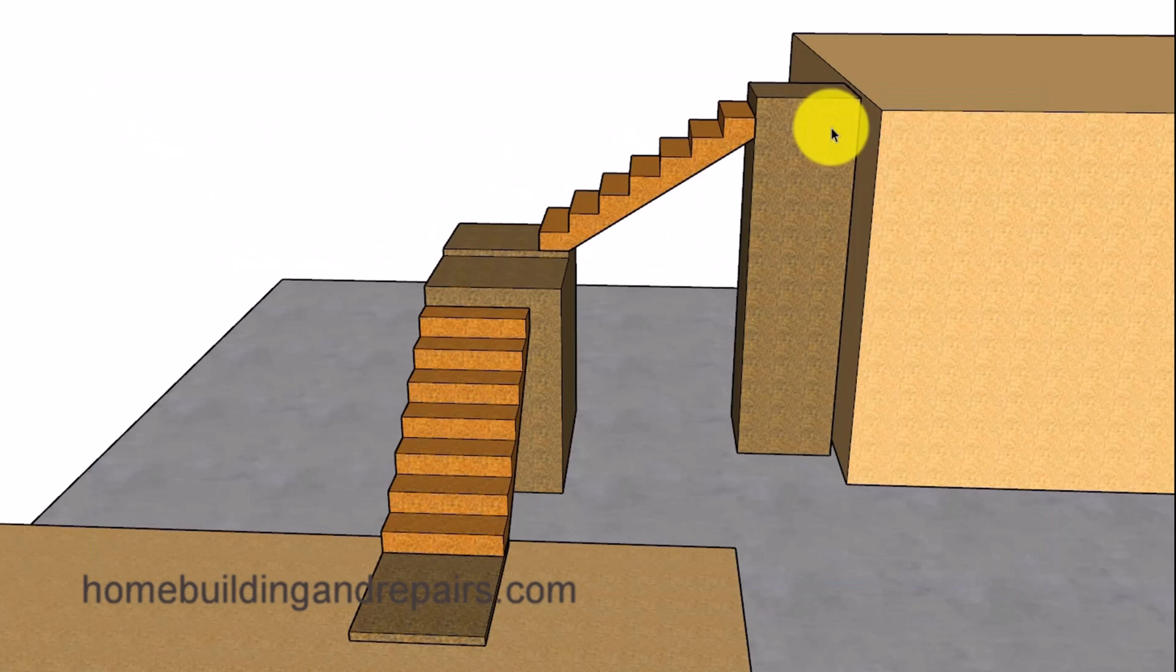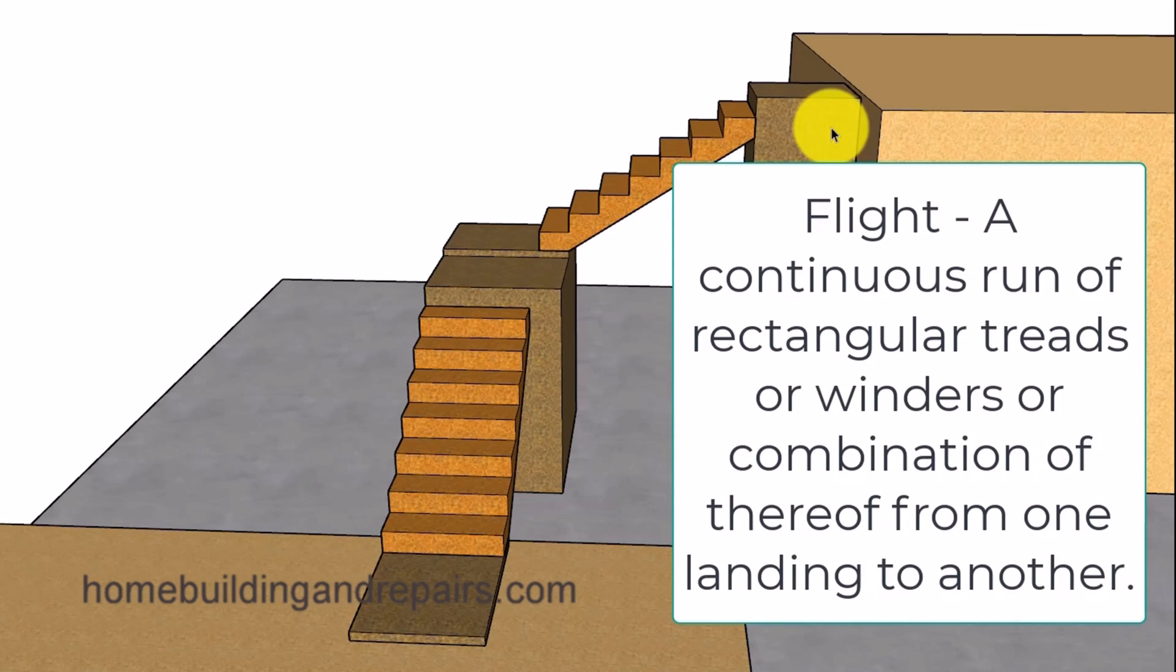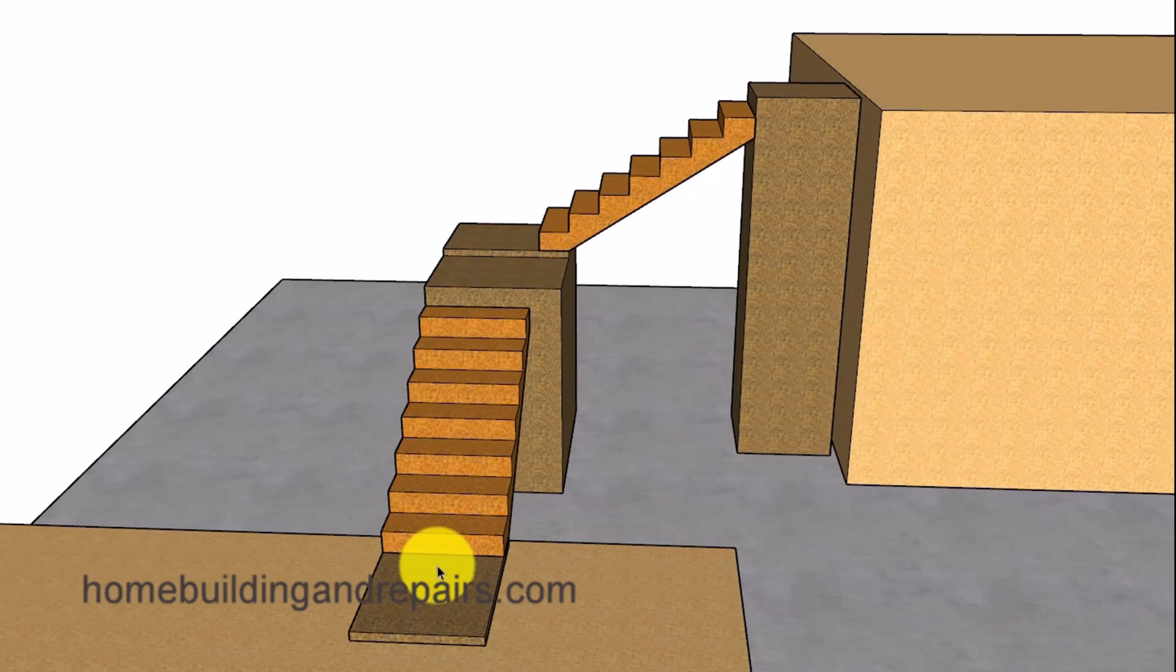Next, let's go ahead and take a look at the word flight. And the definition of that is a continuous run of rectangular treads or winders or combination thereof from one landing to another, meaning that a flight of stairs will be from one landing or one level, one floor to the next landing, suggesting that the flight of stairs would be right here. All risers and treads would need to be the same from this landing to this landing and from this landing to this landing. However, it might not be from here or here.